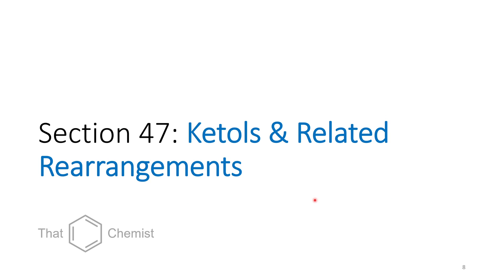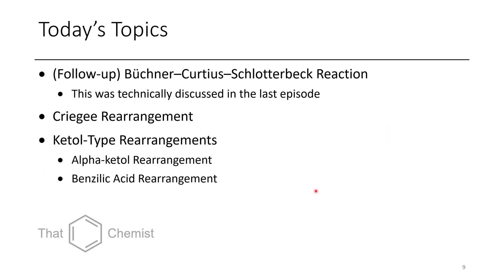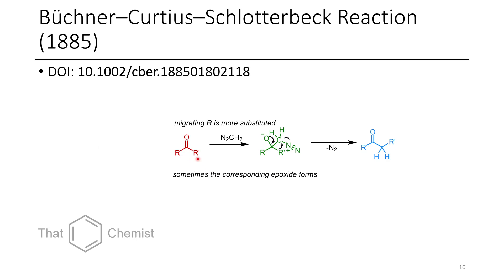Now let's get to today's material: ketols and related rearrangements. First, a quick follow-up — a reaction was misnamed previously. When we have a ketone reacted with diazomethane or related compounds such as TMS-diazomethane, this is technically a Buchner-Curdius-Schlatterbeck reaction, which is different from what I called it in the last episode. I'll add a note in that episode's description. This is a two-step process, distinct from simple diazonium formation.